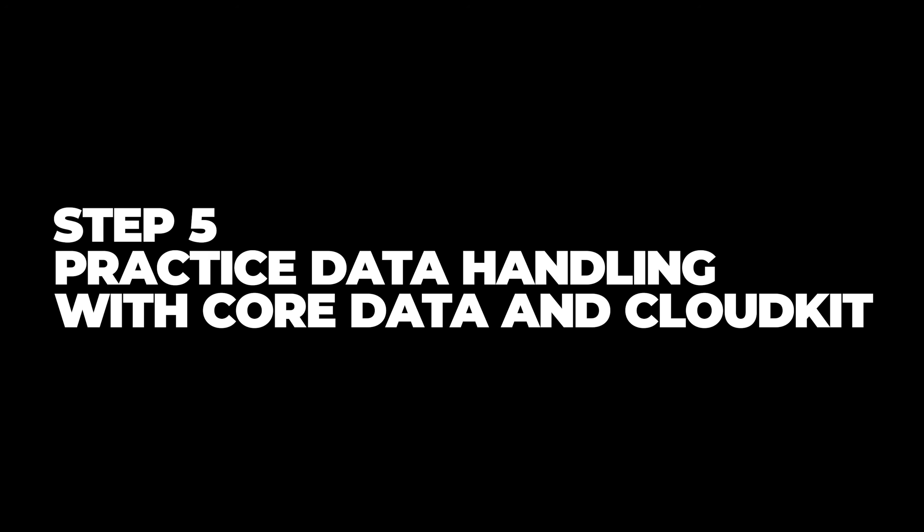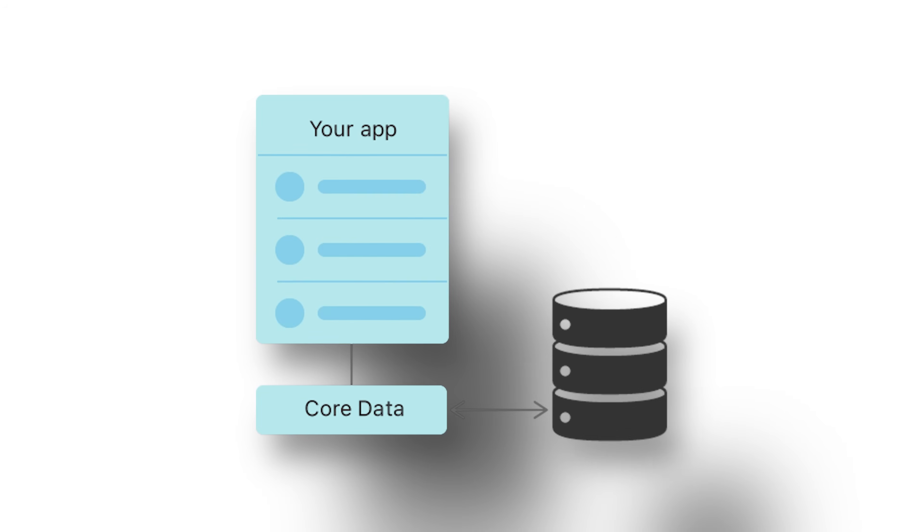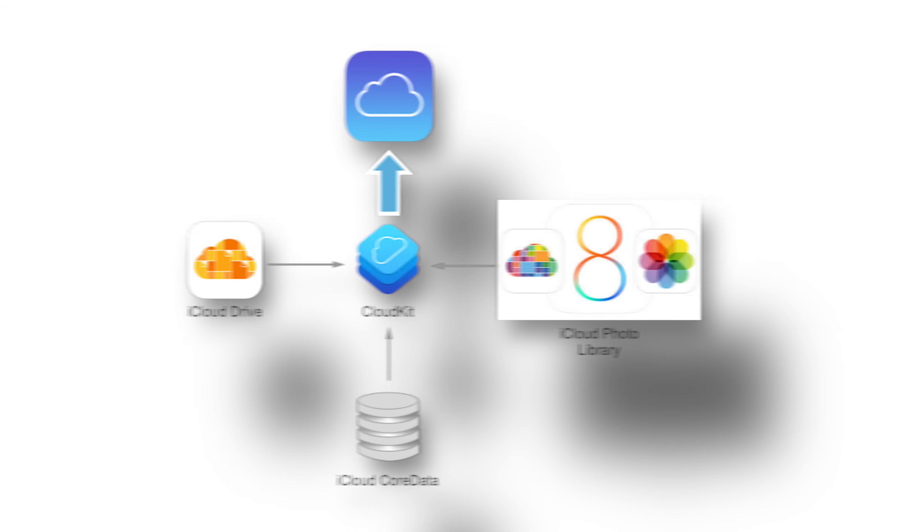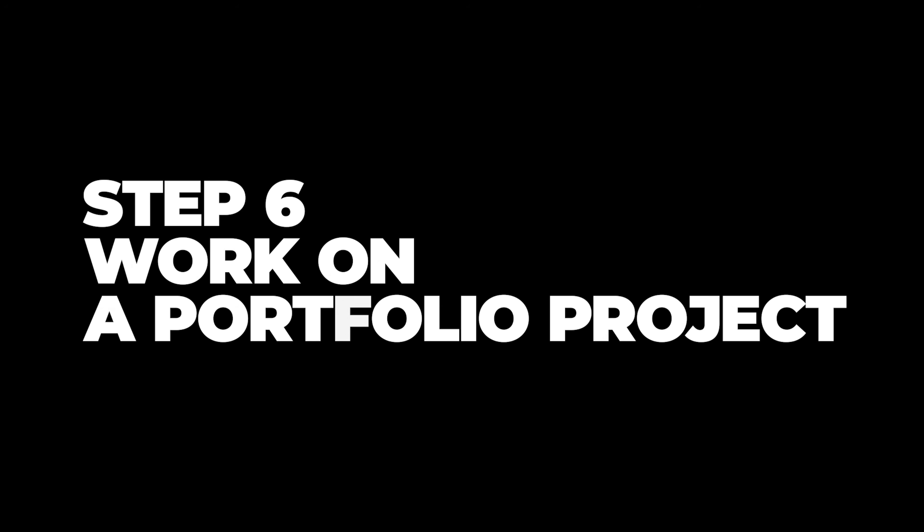Step 5: Practice data handling with CoreData and CloudKit. As you advance, learn how to work with data. CoreData lets you save data on the device, while CloudKit allows you to sync data to the cloud. Try creating an app that saves user info locally or syncs data between devices.